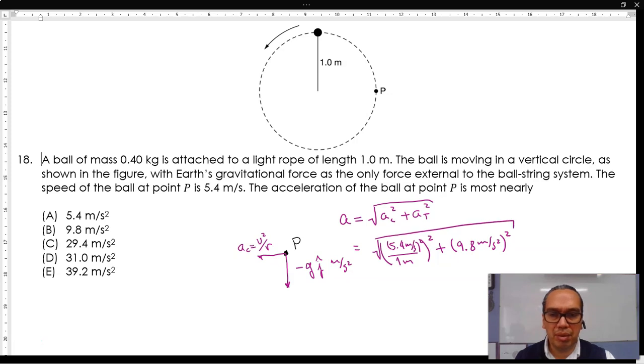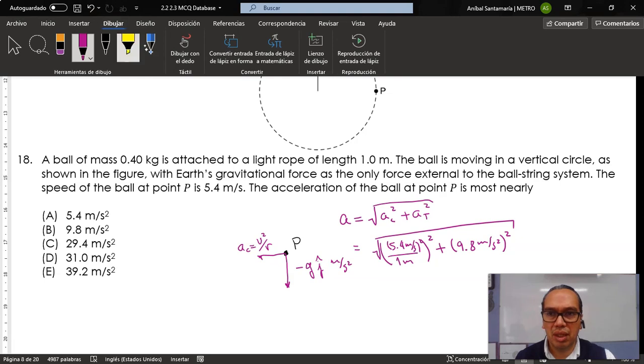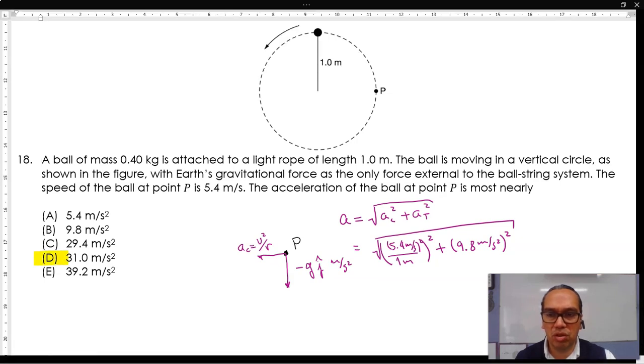If you do the arithmetic here, you will find out that this is about 31.0 meters per second squared, and your answer is D.